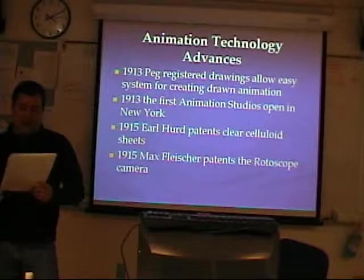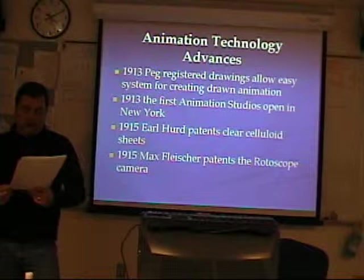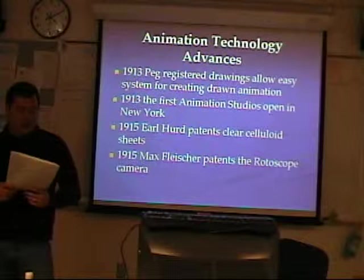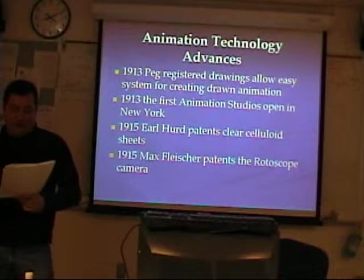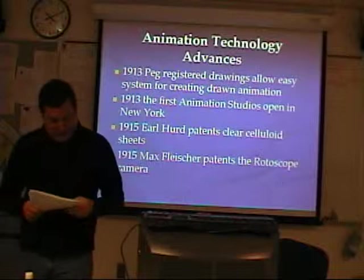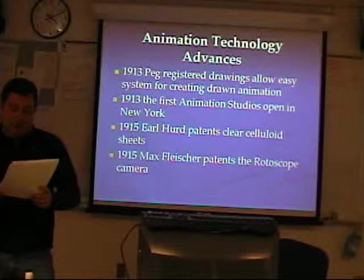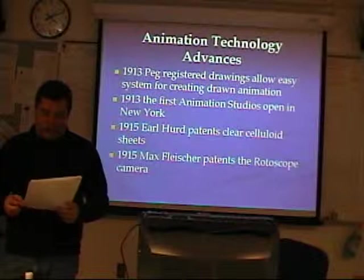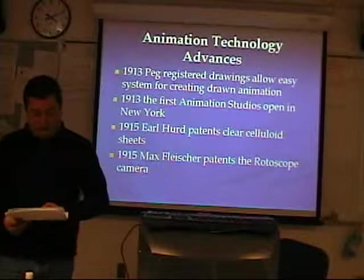Several innovations in animation technology helped foster the new industry. First, in 1913, peg-registered drawings started being used — with holes punched at the bottom of pages and mounted on a peg bar when animating and shooting under the camera, creating much steadier animation. That same year, several animation studios were founded in New York, including Bray Studios. In 1915, Earl Hurd patented the clear celluloid sheet, also known as the cel. This was significant because it made it possible to draw the background only once and animate characters on top of it, greatly reducing the work of retracing the background frame by frame, and it later led to the cartoon look of black outlines filled with color that we're used to today.